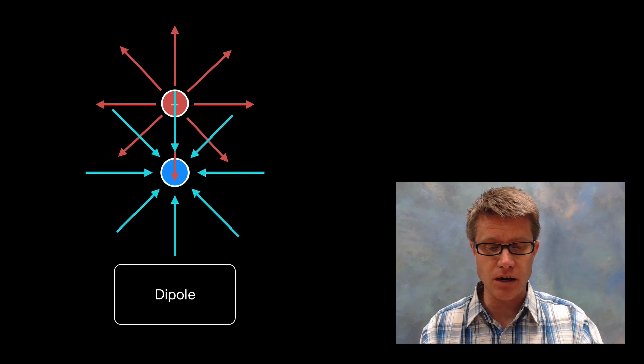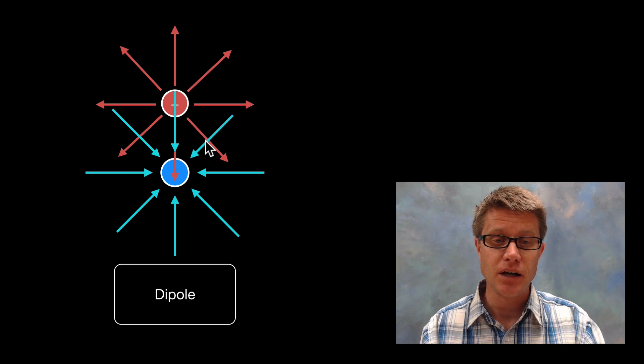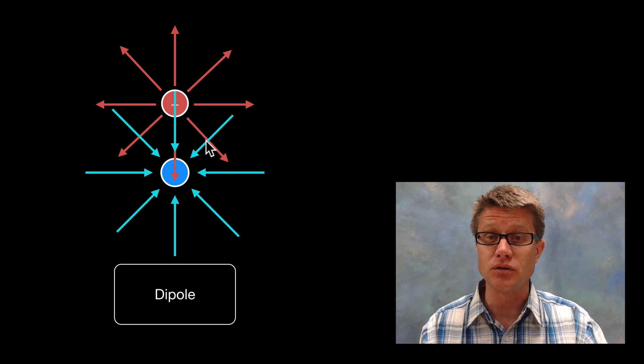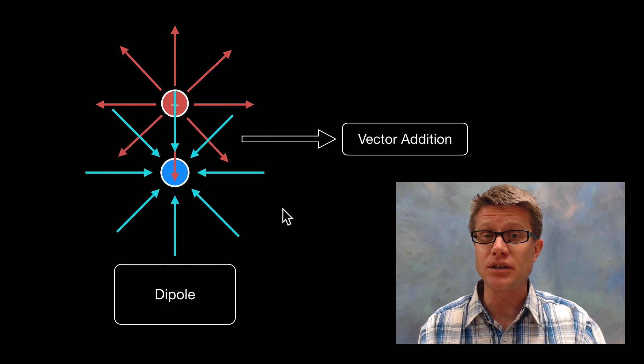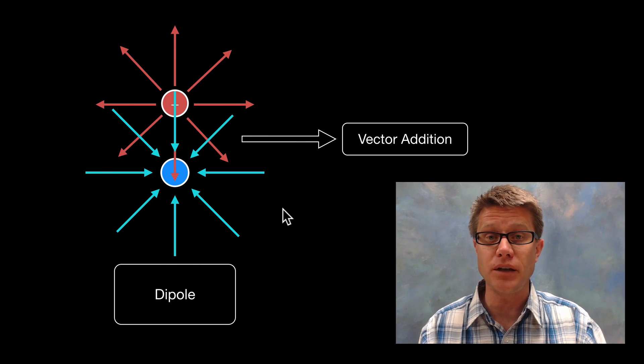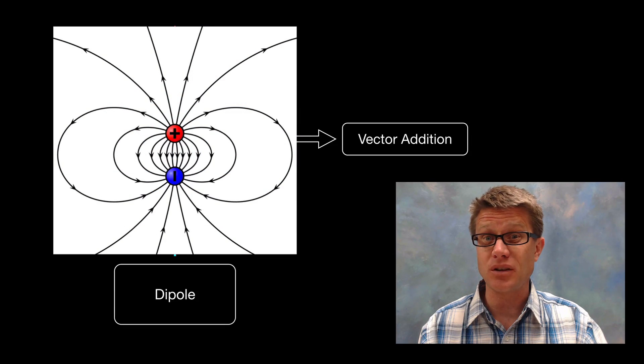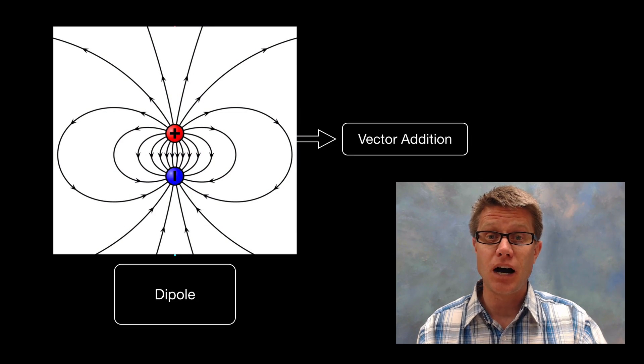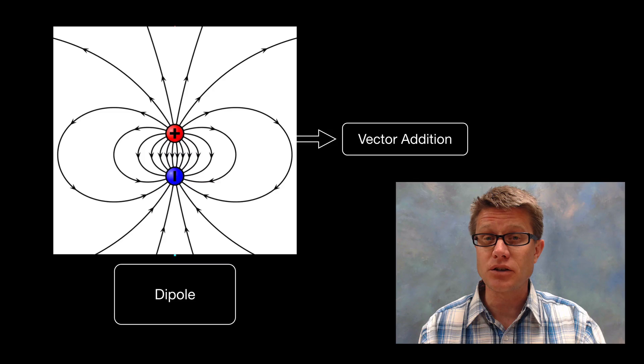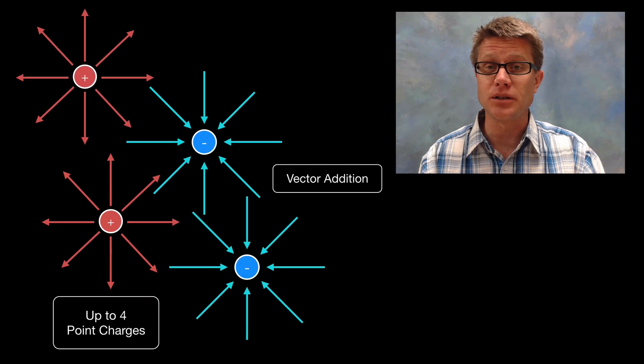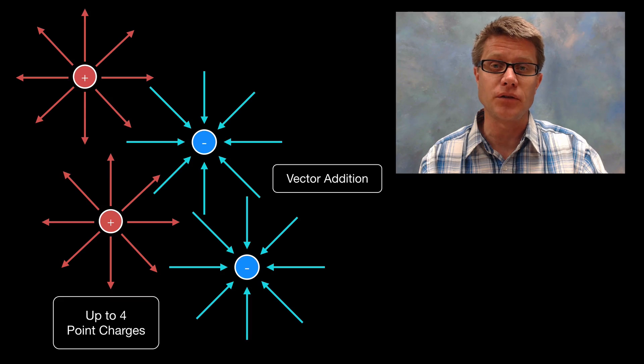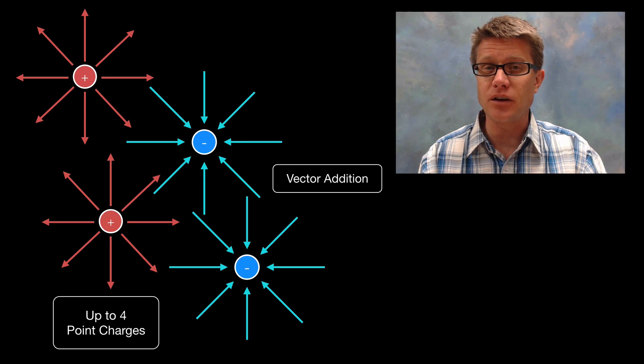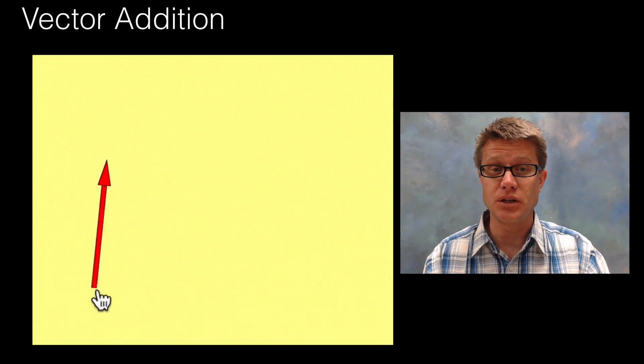And to understand what's going on, for example right here when we have the addition of those two electric field vectors, we have to use vector addition. That will allow us to figure out at any point around this dipole what's the net electric field. And what you get is a map that looks somewhat like this. It's crazy. By the end of this, if you really understand vector addition, you should be able to take a point within up to four different charges and feel where that electric field is pointing.